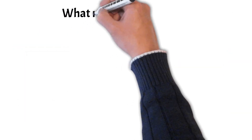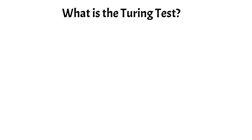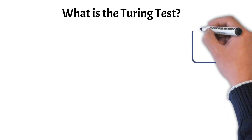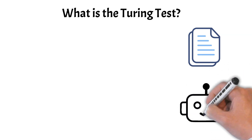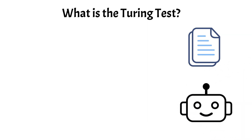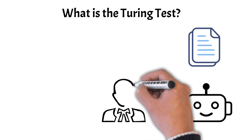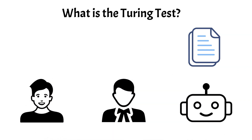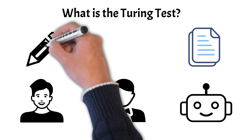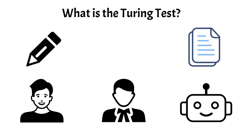Now let's see what the Turing test is and why it is so important. The Turing test, proposed in 1950, is a measure of a machine's ability to exhibit intelligent behavior indistinguishable from that of a human. In the test, a human judge interacts with both a machine and another human without knowing which is which, solely through written communication. If the judge cannot reliably distinguish between the human and the machine, the machine is said to have passed the test.